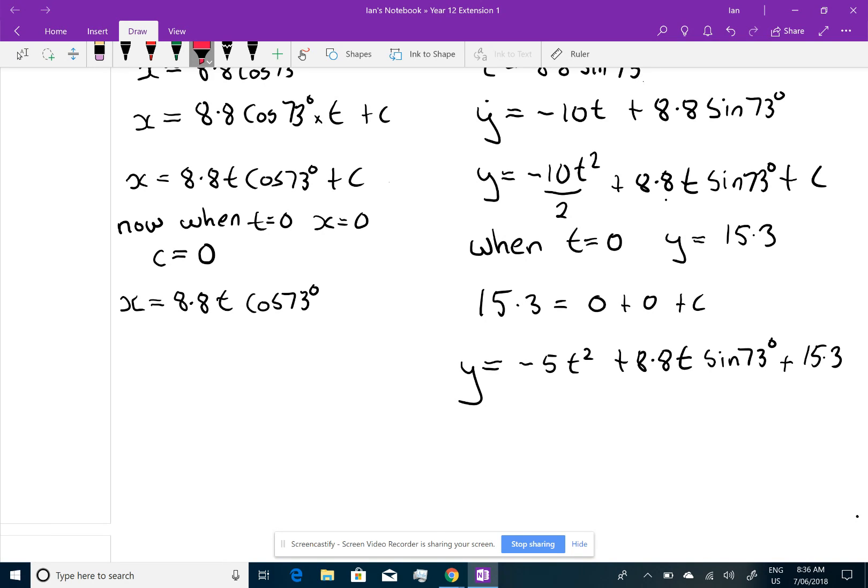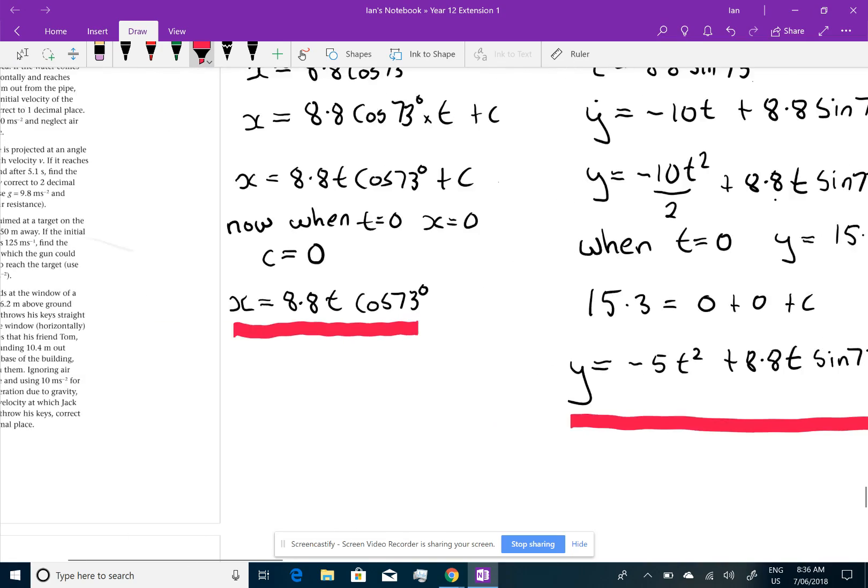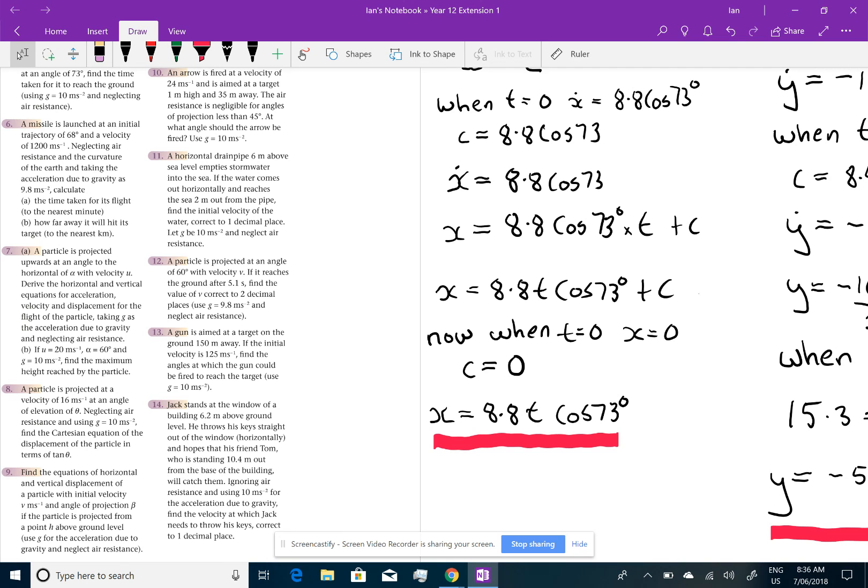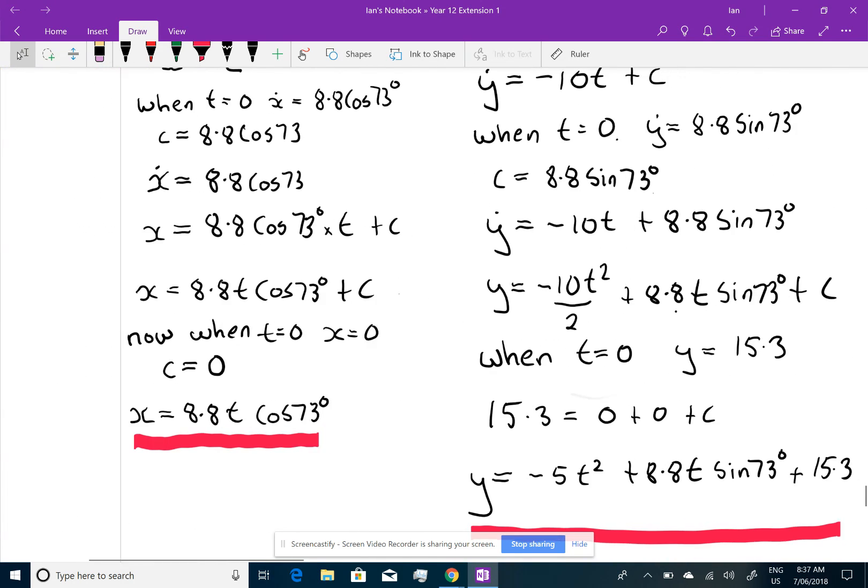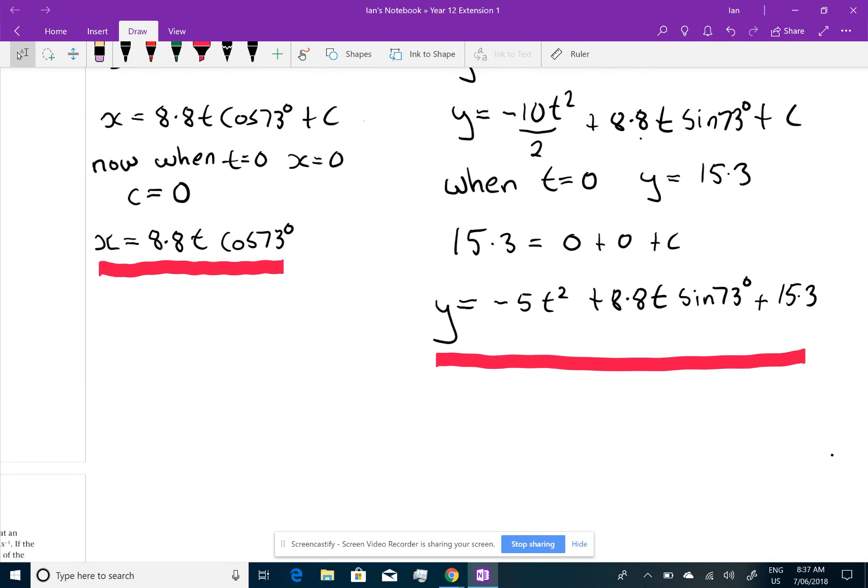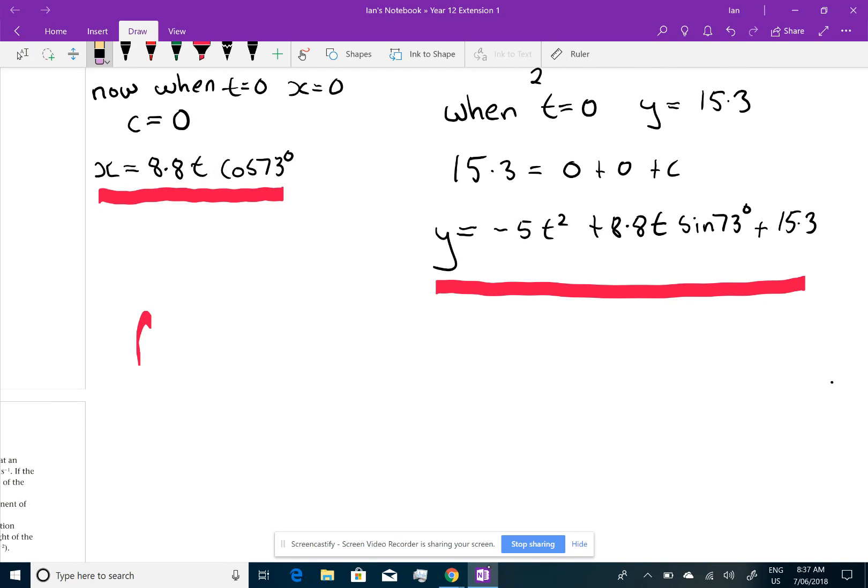So, now we have our two equations of displacement, the horizontal and the vertical, and we've done it from first principles. What did the question ask? The question said, find the time taken for it to reach the ground. Well, I didn't even really need to do the horizontal, but the one that's going to help me here is going to be the vertical, because I want to find out when that equals 0. So we're finding t when y equals 0. So 0 equals minus 5t squared plus 8.8 sin 73 degrees times t plus 15.3.